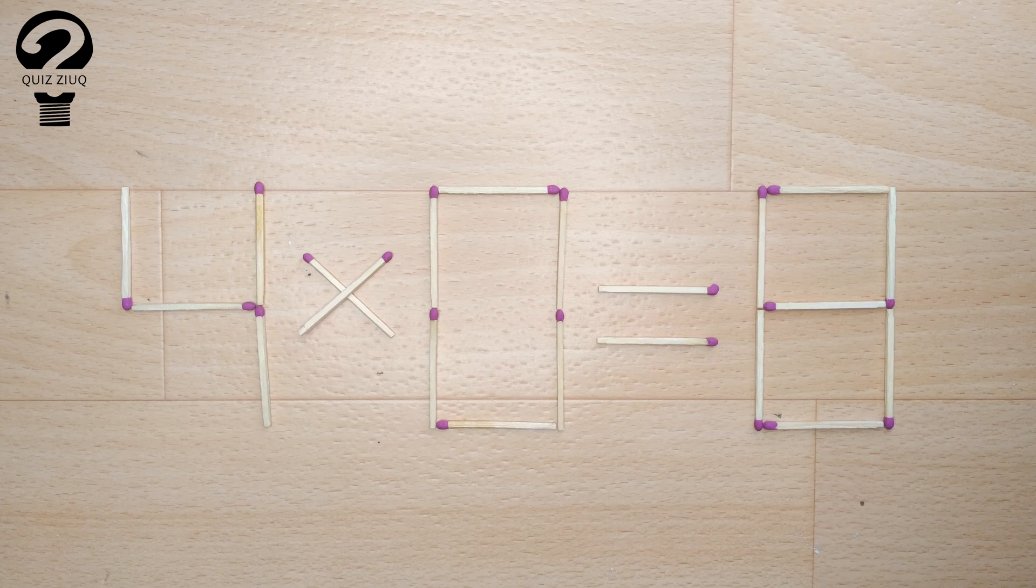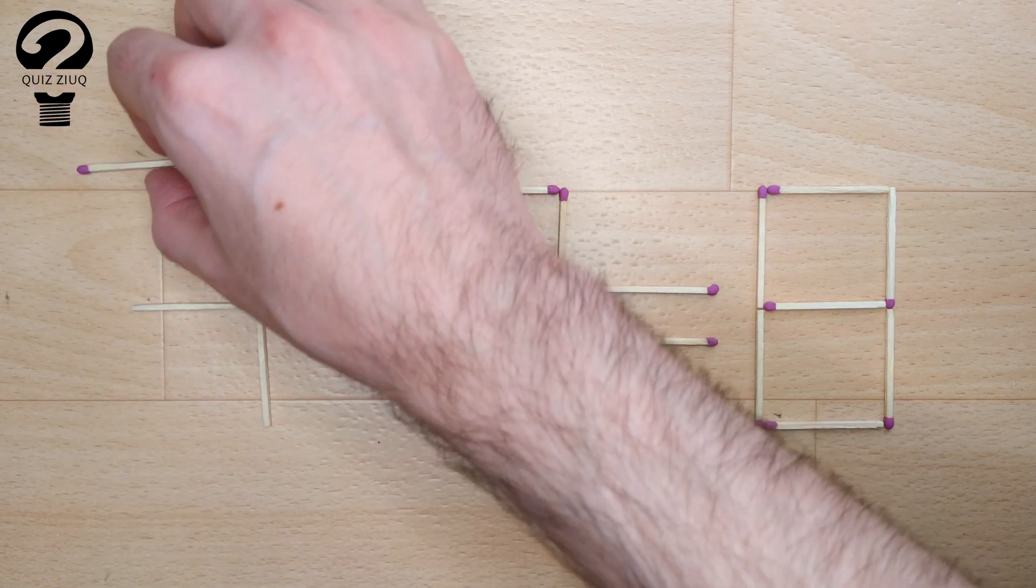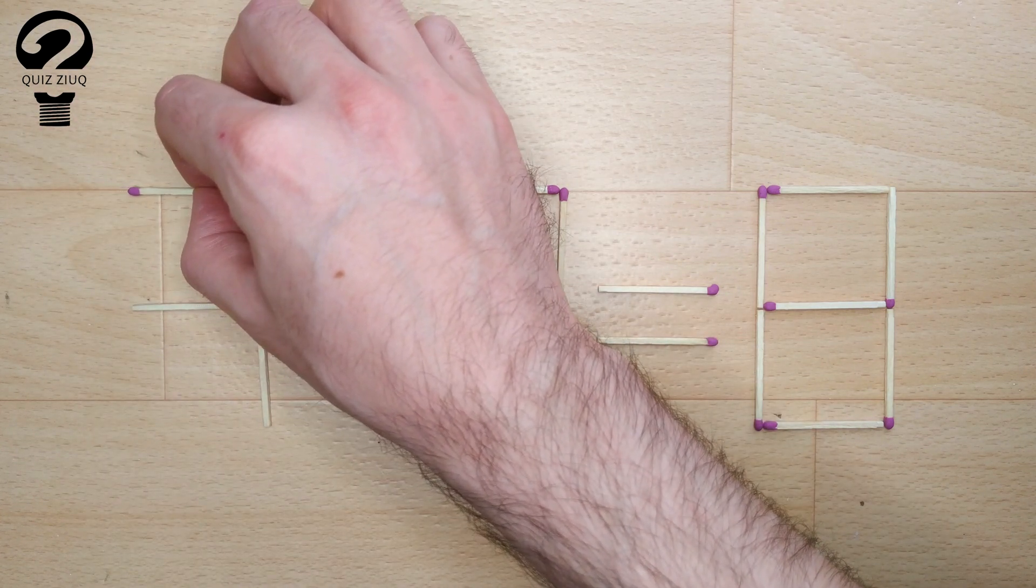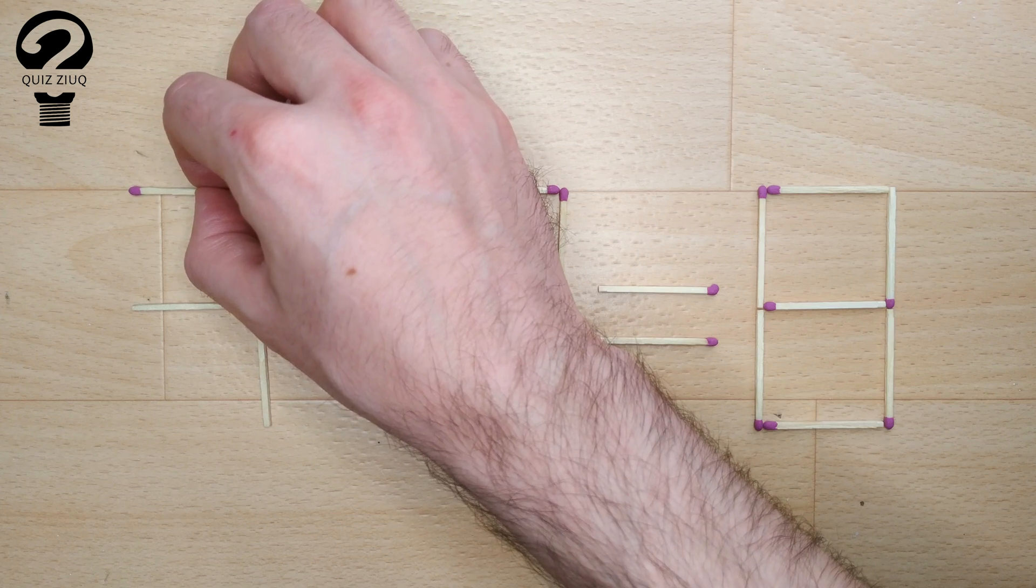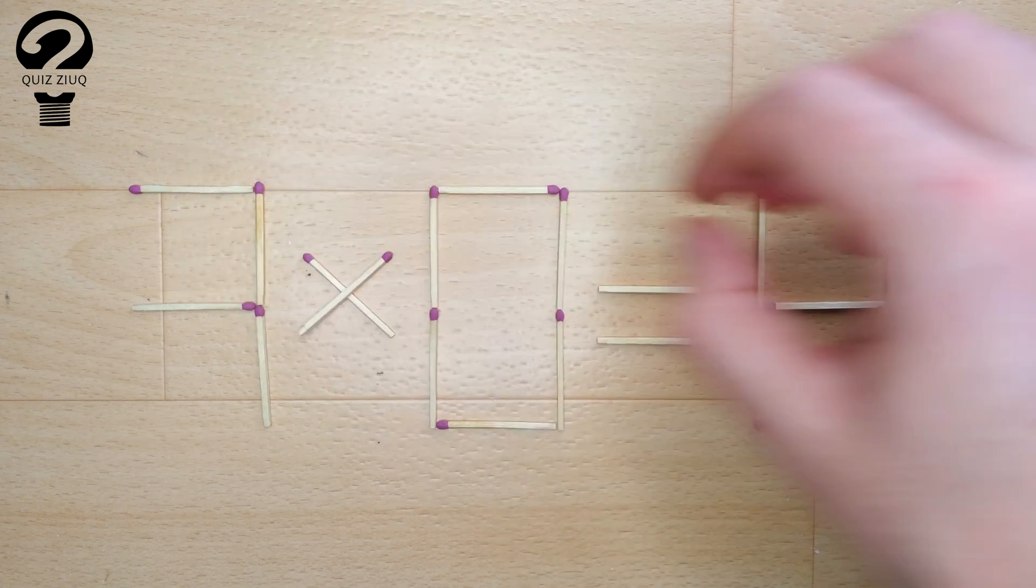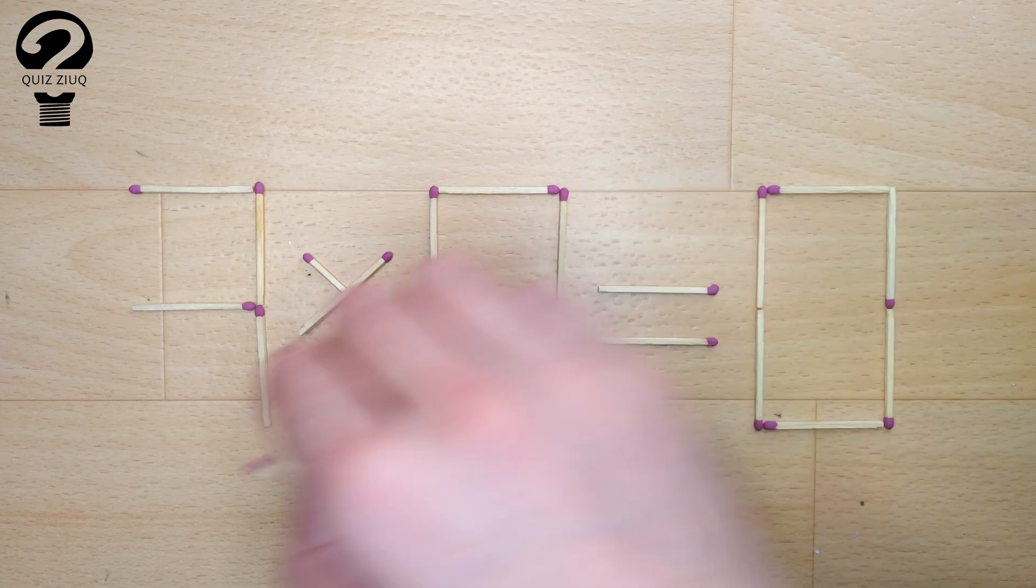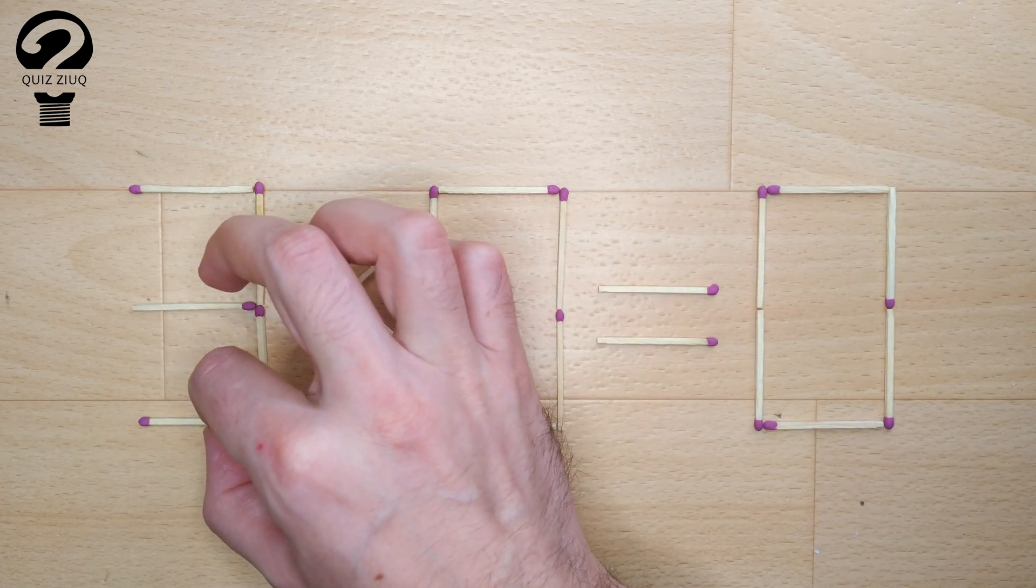And now, when we check the condition, 3 times 0 equals 0. 0 equals 0. Our equation is correct. The task is completed. The puzzle is solved. Don't forget to like.